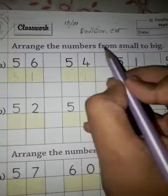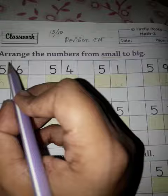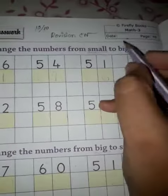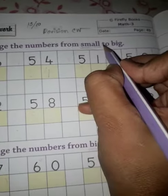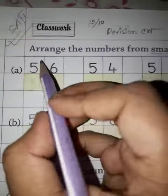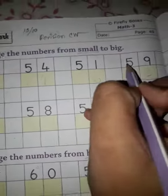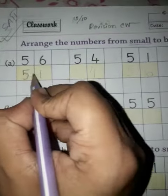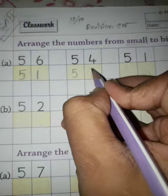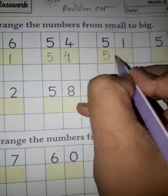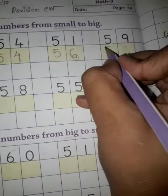Arrange the numbers from small to big. Now, what are the numbers? First, 56, 54, 51, and 59. So we have to write 51, then 54, then 56, and last one is 59.